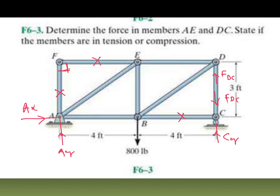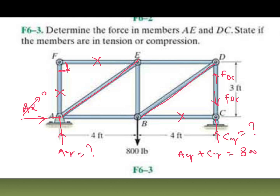Checking the free body diagram equilibrium conditions: Ax is the only horizontal force with no other horizontal force, so Ax becomes zero. In the vertical direction, Ay plus Cy equals the external force of 800 lb. Taking moment along A gives you Cy value; taking moment along C gives you Ay value. Using method of joint at AE and BD and DC: at point C, FDC is compressive, and at point A, FAE is also compressive.